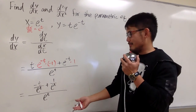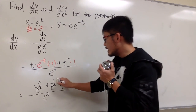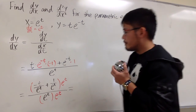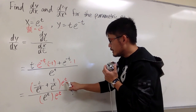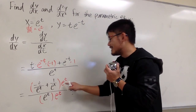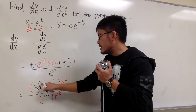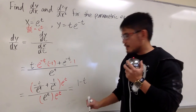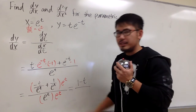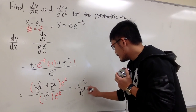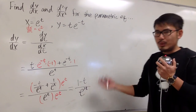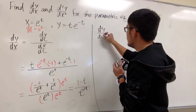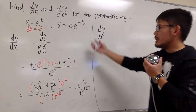To simplify this complex fraction, I'll multiply the top and bottom by e to the t. When you do that, the e to the t terms in the denominators cancel. On the top, you just have negative t plus 1, which I'll write as 1 minus t. On the bottom, we have e to the t times e to the t, which is e to the 2t. So dy/dx equals (1 minus t) over e to the 2t.